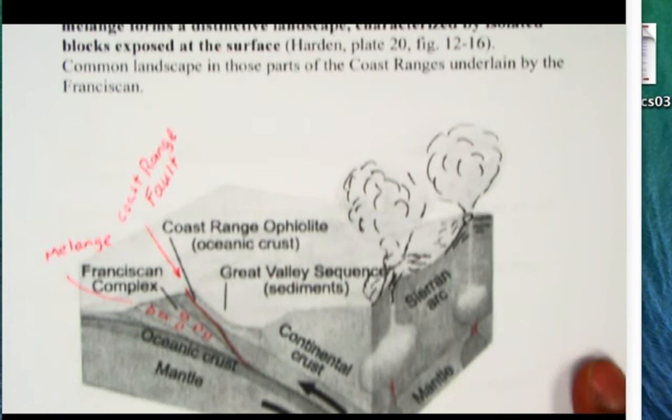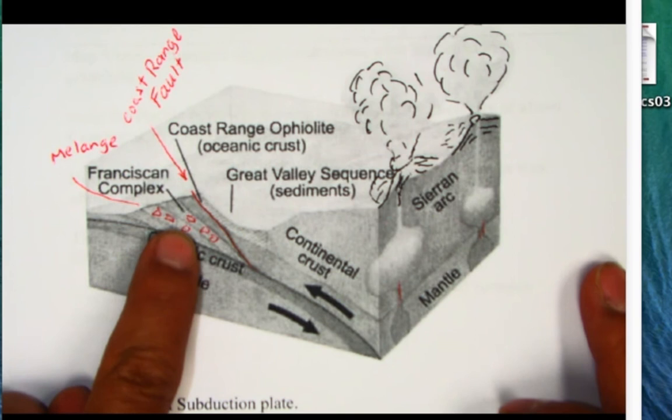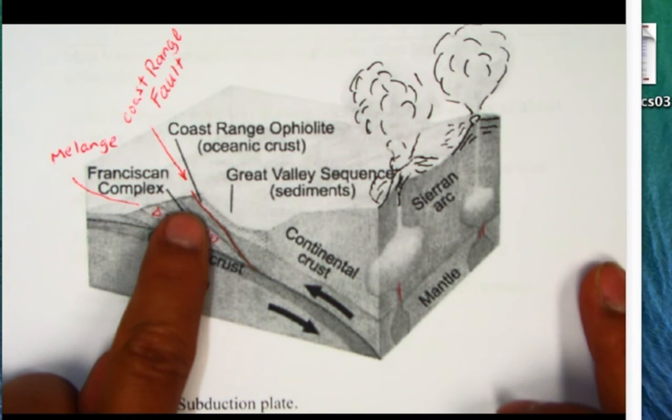Now if we look at what Mesozoic California looked like - convergent margin, the subduction's going on here. You got the Franciscan Complex with the melange, those exotic blocks. Then the Sierra Arc forming over here, the Central Valley Great Valley Sequence in the middle, Coast Range Ophiolite cropping out here in the eastern Coast Ranges. Remember that it's going to be separated from the Franciscan by this Coast Range Fault.